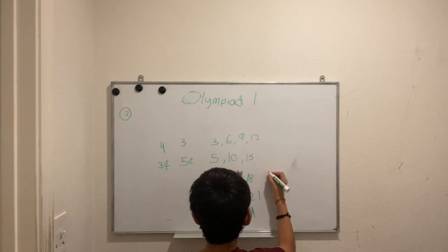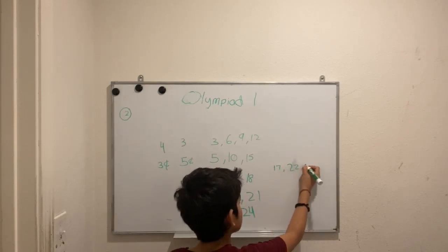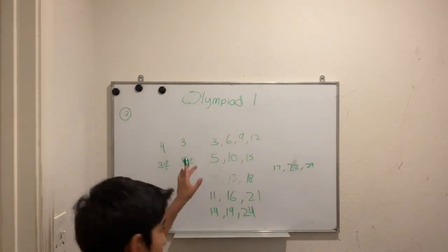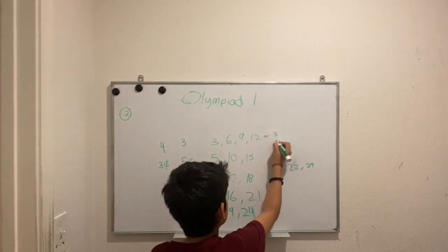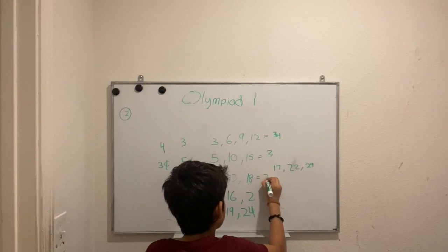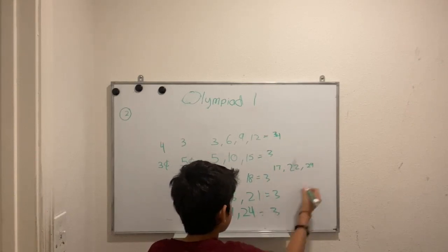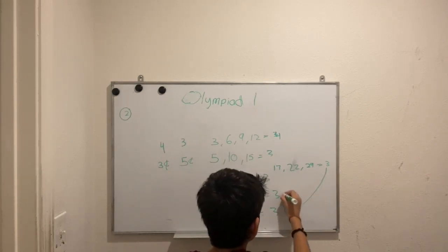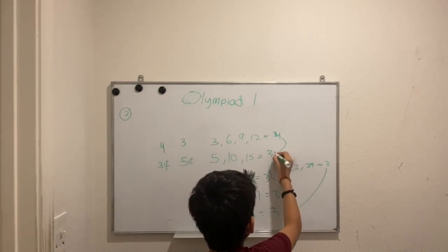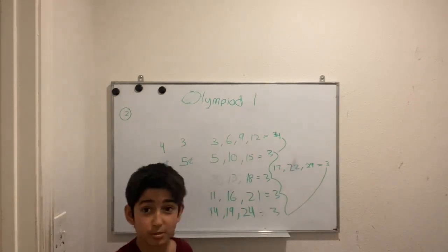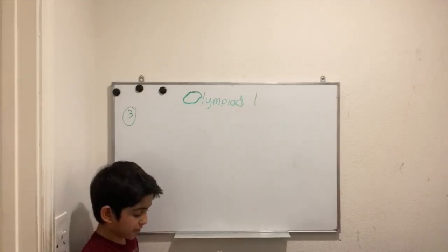Continuing the combinations, the last group gives values up to 29. Adding all these combinations together — the totals are: 3, 4, 7, 10, 13, 16, and 19 — so there are 19 different possible postage amounts.